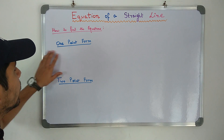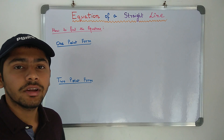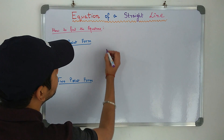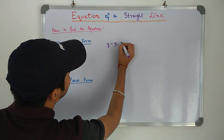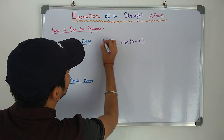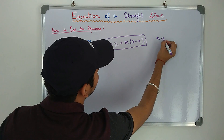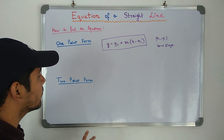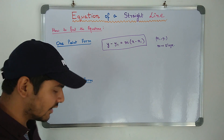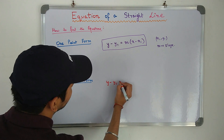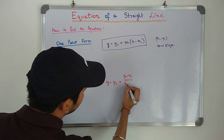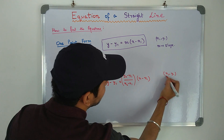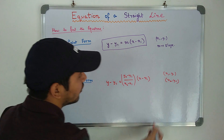Moving on to the final two forms. One-point form: if one point on a straight line is given as (x1, y1) and the slope m is given, the equation is y − y1 = m(x − x1). Two-point form: when two points (x1, y1) and (x2, y2) lying on a given straight line are given, the equation is y − y1 = [(y2 − y1)/(x2 − x1)] × (x − x1).